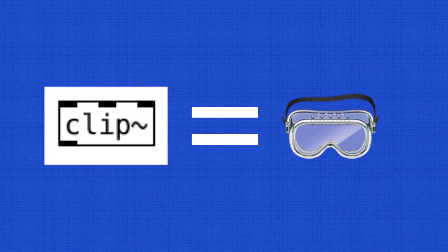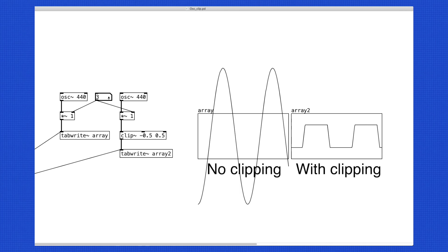So a clip object is necessary in every patcher for safety. Even if we accidentally create a loud noise, clip object will retain the volume at a safer level.